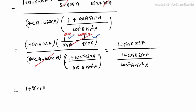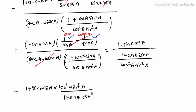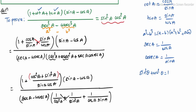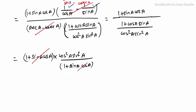Finally, we have (1 + sin A · cos A) · cos²A · sin²A divided by (1 + sin A · cos A). The (1 + sin A · cos A) terms cancel, and we are left with sin²A · cos²A. This equals the RHS. Hence proved. Thank you.